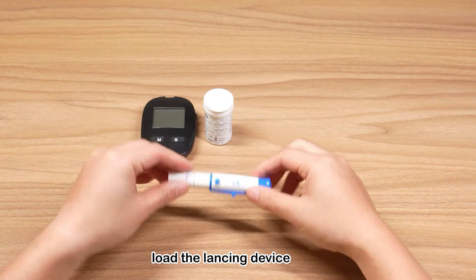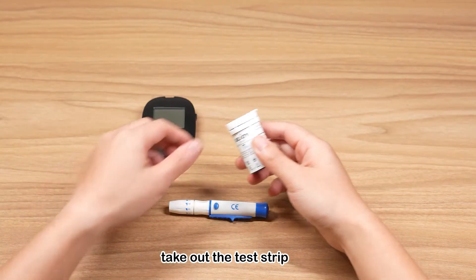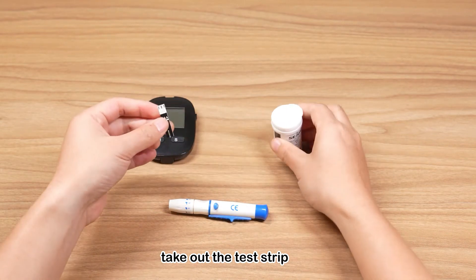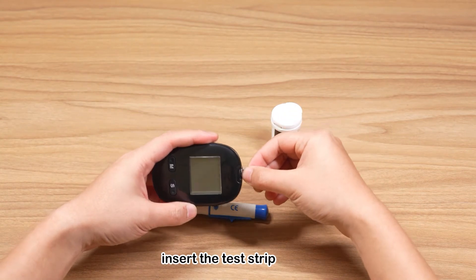Load the lancing device. Use the test strip immediately after you open the bottle. Insert the test strip and check the flashing mark on the screen.